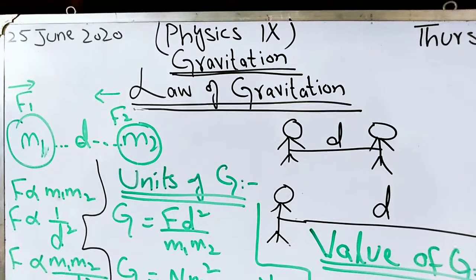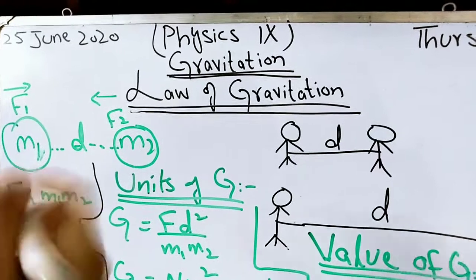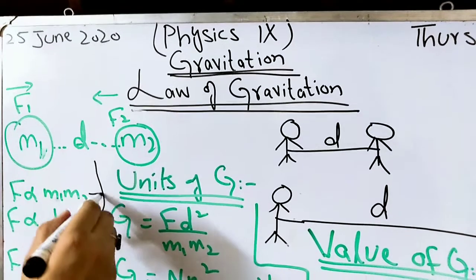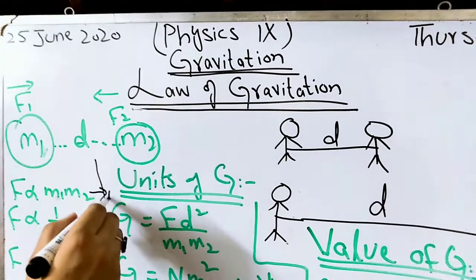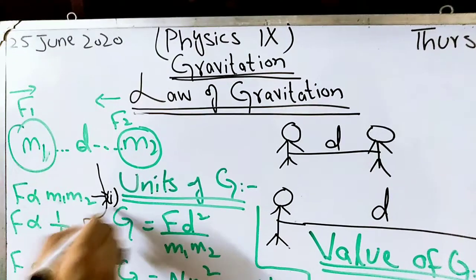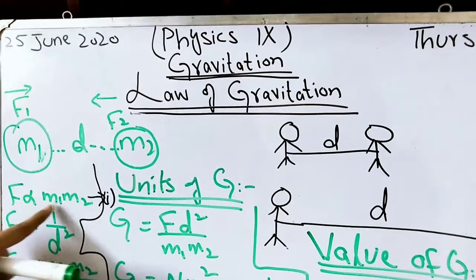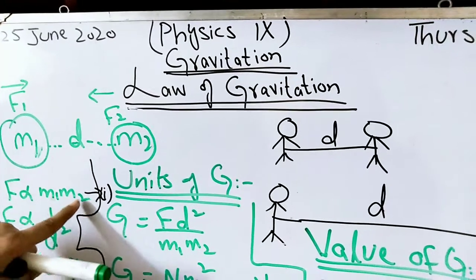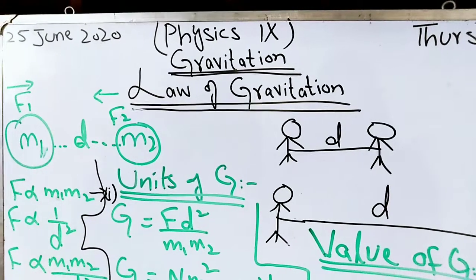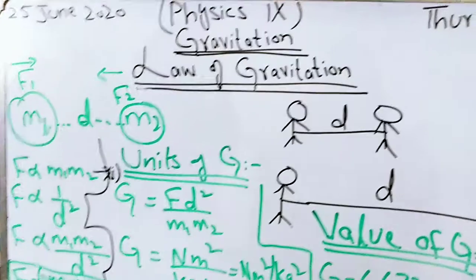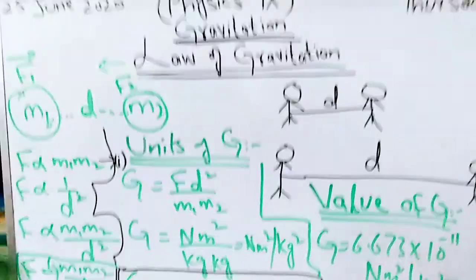So the force undergoes a direct relation with the product of their masses. This is the first equation: F is directly proportional to M1 times M2.